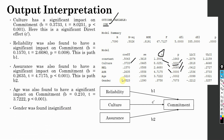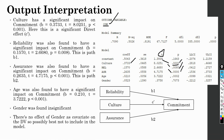However, gender was found insignificant. Commitment is the same for both male and female respondents, so there is no effect of gender as a covariate on the DV. It is possibly best not to include it in the final write-up — when you do your final analysis, remove gender as a covariate because it's not affecting any of your outcome or dependent variables.